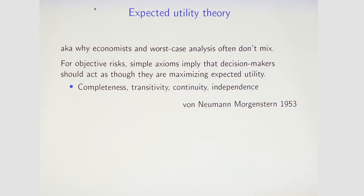This comes down to an argument that pretty much got won by von Neumann in the mid-20th century: the standard theory of expected utility maximization tells us that if I have objective risks — if I give you a lottery over different outcomes where you know the numerical probabilities — some fairly simple axioms imply that decision makers should act as though they are maximizing expected utility. That is, there is some utility function over outcomes such that decision makers should act as if they are maximizing that function. These are exceedingly simple, normatively appealing axioms.